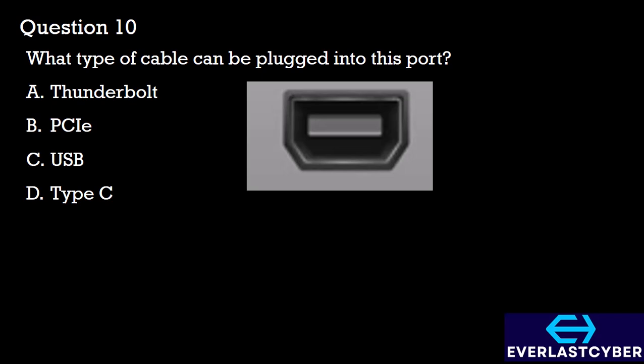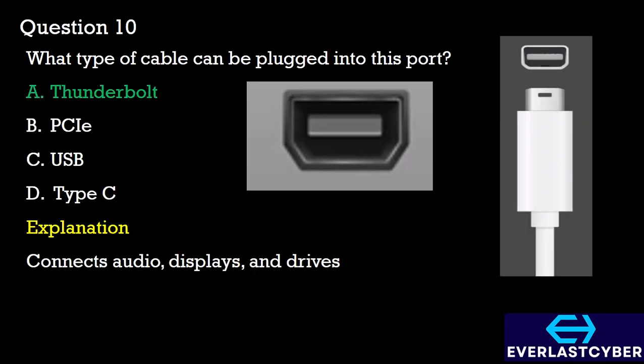Question 10: What type of cable can be plugged into this port? A. Thunderbolt, B. PCIe, C. USB, D. Type-C. This kind of port is the Thunderbolt port, and it connects audio displays and drives. It provides connection of external storage devices to your computer, and can also be used to connect an external graphics card as well as a 10 Gbps Ethernet network for high performance.